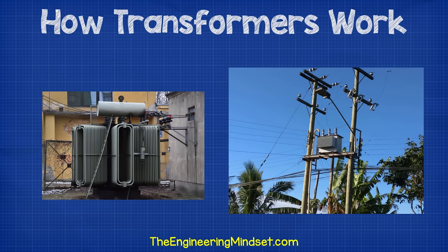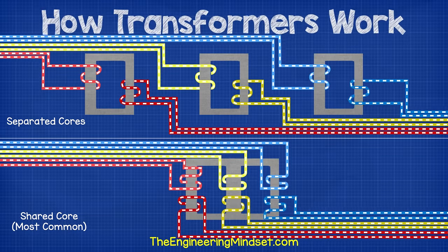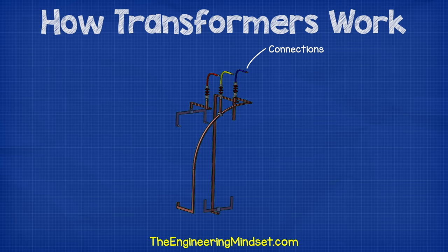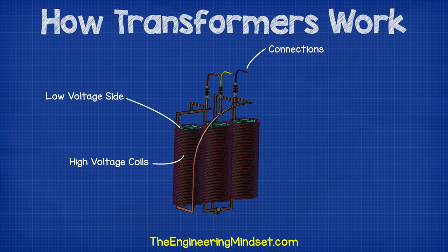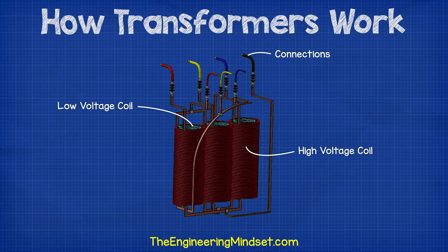The transformers for commercial buildings and power stations are usually in a three-phase configuration. You'll see these placed around your cities and towns. These three-phase transformers can be made from either three separate transformers that are wired together, or they can be built into one large unit with a shared iron core. In this setup, the coils will typically sit concentrically within one another with the higher voltage coil on the outside and the lower voltage coil sitting on the inside. These coils are insulated from one another, so that only the magnetic field will pass between the two coils.